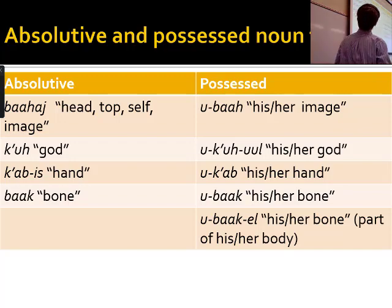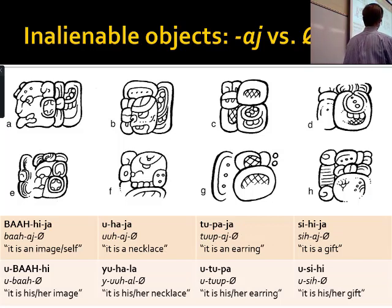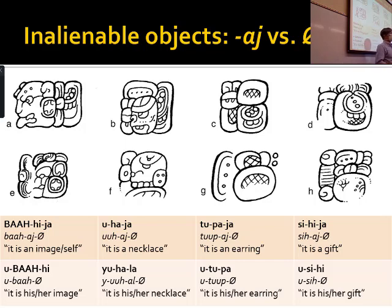These are objects which are not supposed to be on their own, so when they are on their own they require a special suffix, and there's no good way of translating that difference into English. For example, necklaces and earrings are supposed to be part of someone. When they're not, they require a suffix. So when I see an earring on the road, I say 'tupac' — whoever listens understands I'm not talking about an earring on someone, because if it were on someone it would have to be possessed: 'utup,' and then I'd name the person.